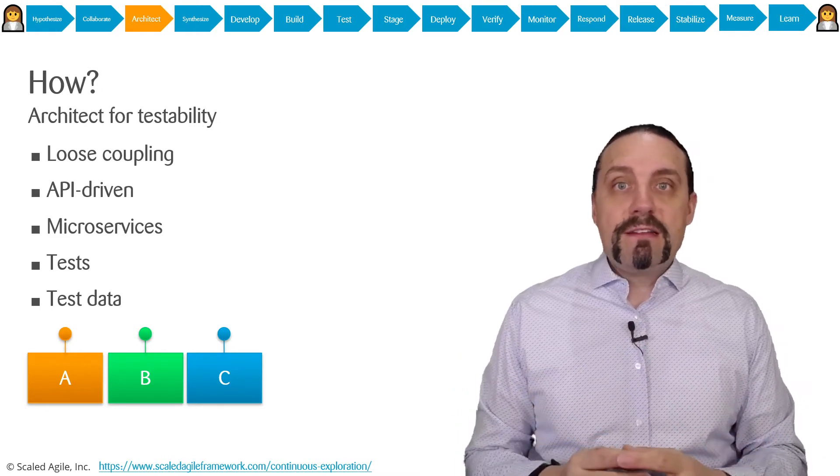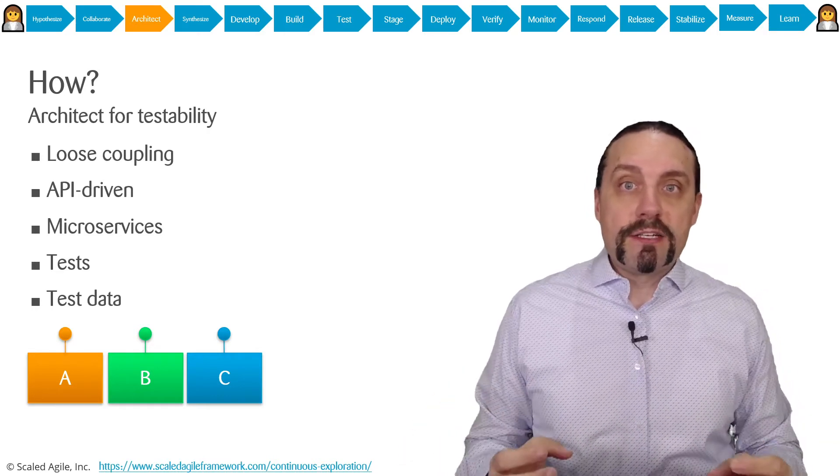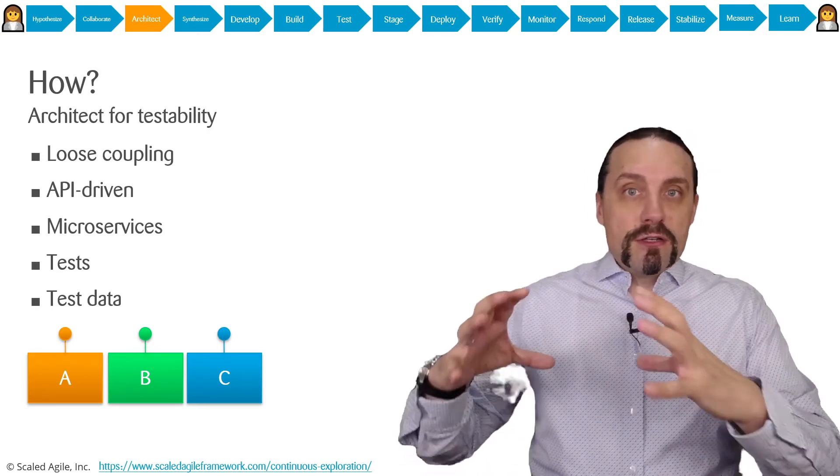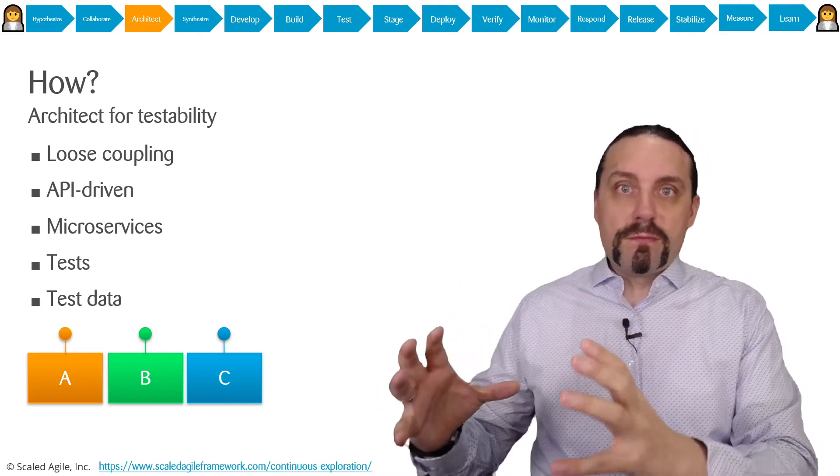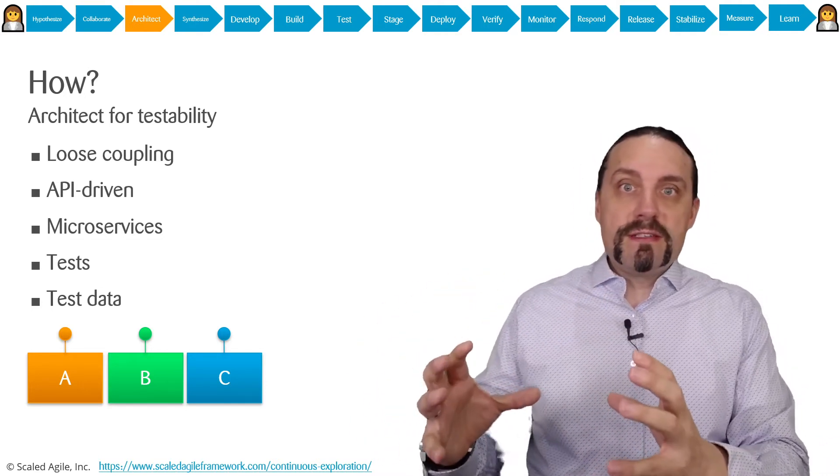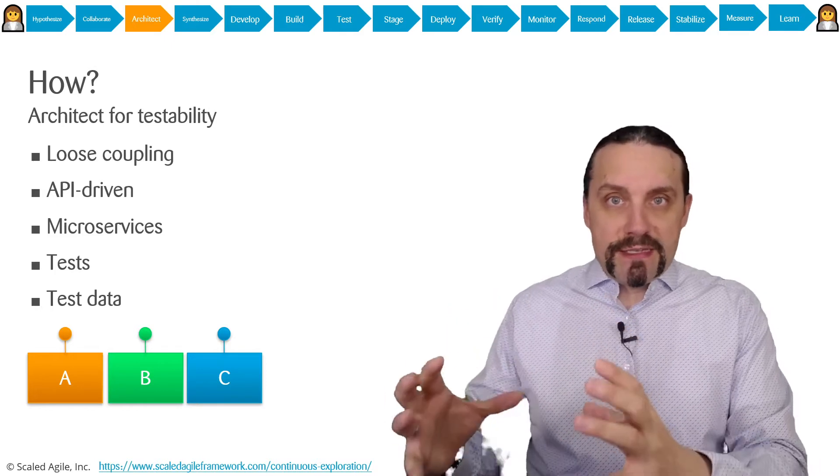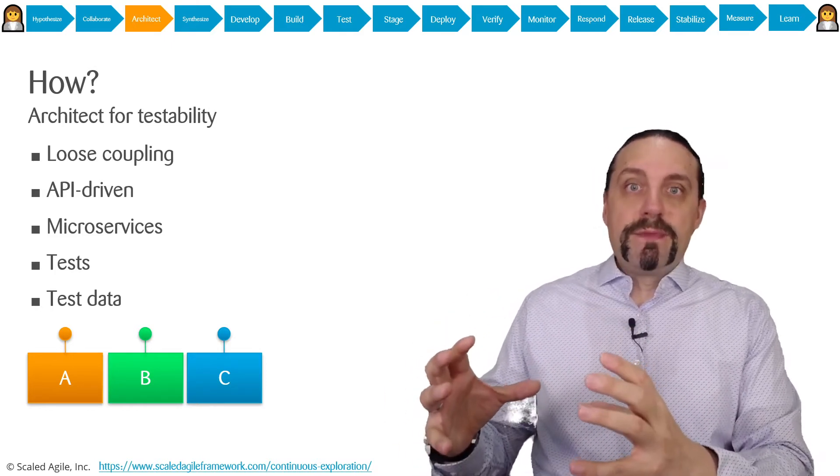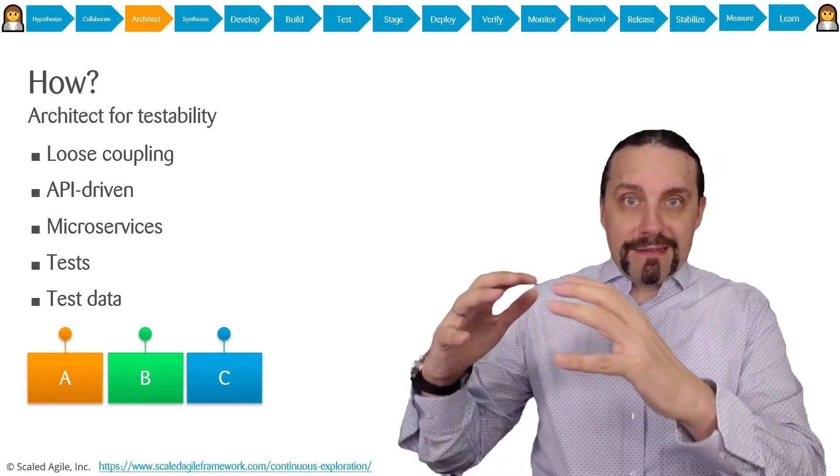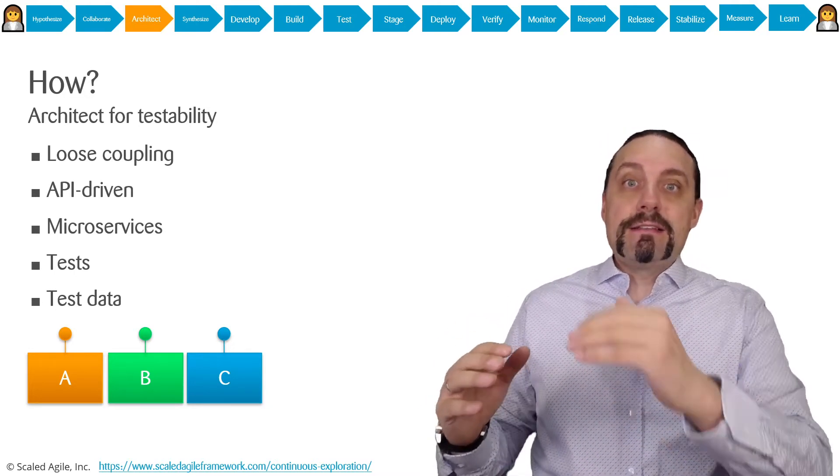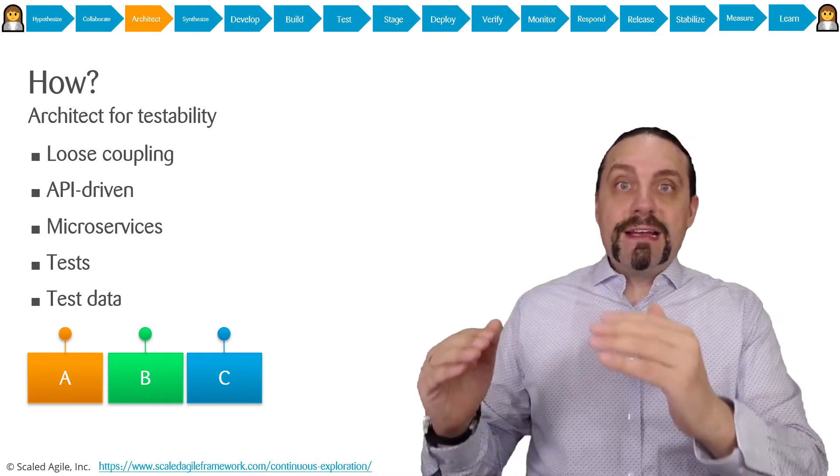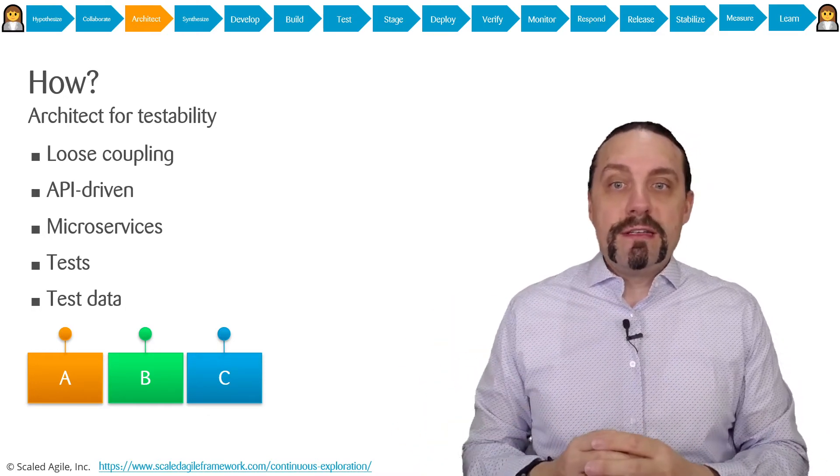We do that by having loosely coupled architectures. These are small components, microservices, or services which serve a single purpose and which we can test. The best way to test something like this is going over the API.